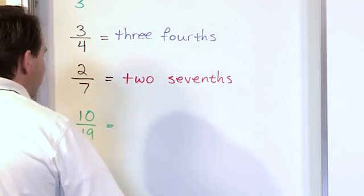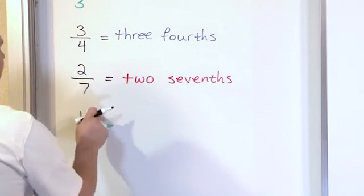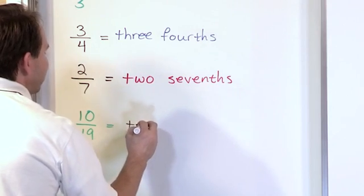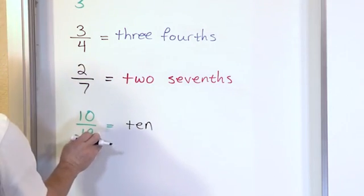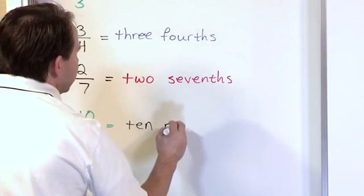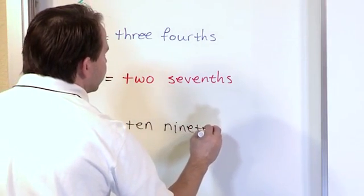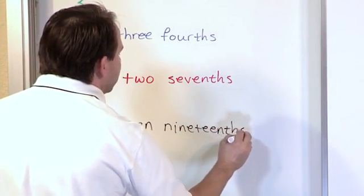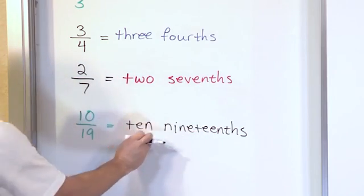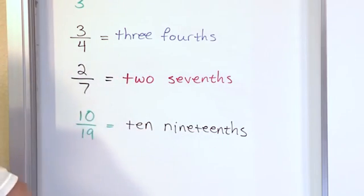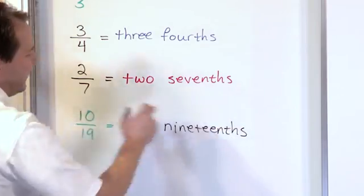what fraction would I write down in a book or in a paper? I would write down that I gave him 10 because that's the top. Nineteenths because that's the bottom. So 10 nineteenths. And the way you read it is exactly what we're representing with the math: 10 pieces out of 19. That's what it means.